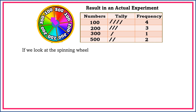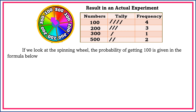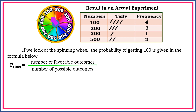If we look at the spinning wheel, the probability of getting 100 is given by the formula below. P of 100, or probability of 100, is equal to number of favorable outcomes divided by number of possible outcomes. For the number of favorable outcomes, we have 4, because we have 4 sections labeled 100 in our spinning wheel: 1, 2, 3, 4. For the number of possible outcomes, the answer is 8, because we have 8 elements in our spinning wheel.